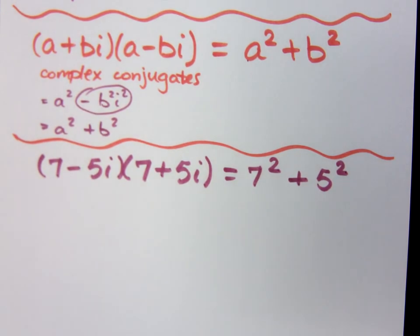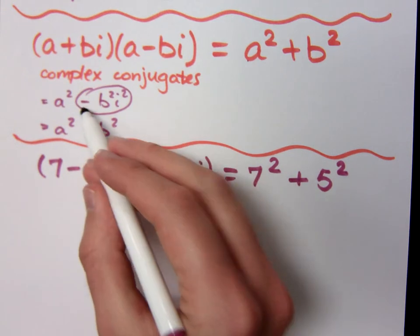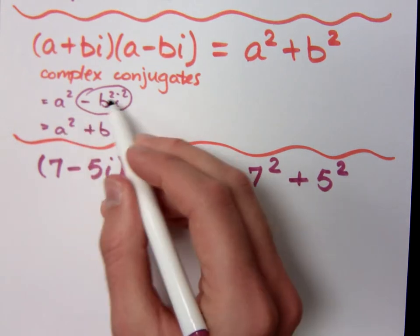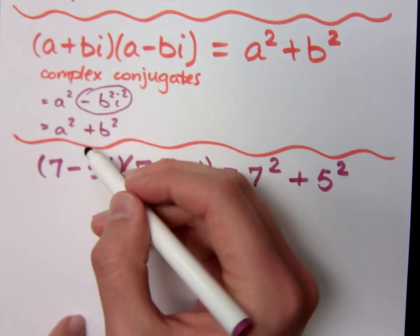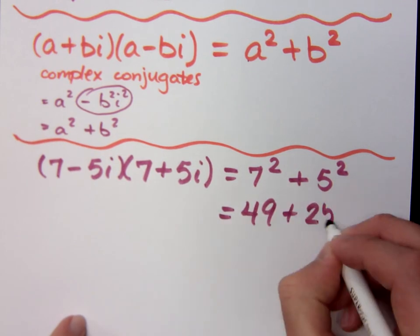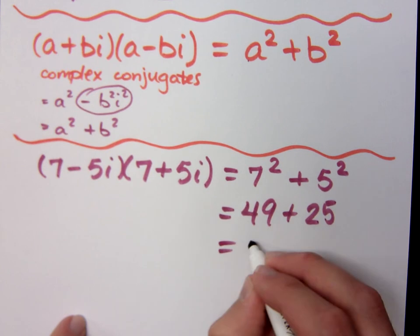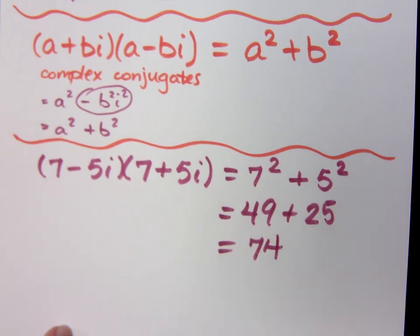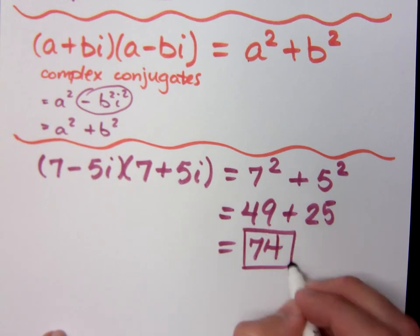What started out as a difference of squares becomes the sum, because in that original difference of squares, you would have had an i squared. If you're subtracting with an i squared, the subtraction with the i squared, negative negative would turn that into positive. That's why I get to the shortcut here. So this is 49 plus 25, and all of that is equal to 74. Do you all agree? Life is good.